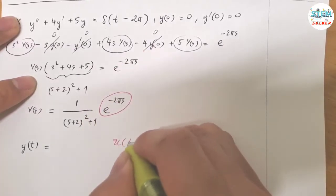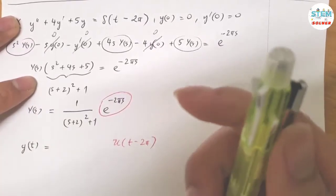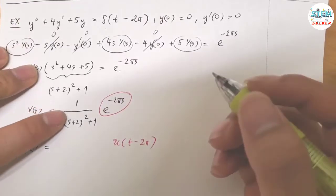Now take the L inverse of both sides. For this one, this gives me U of (t-2π). So work this out right away and you must get it right. There's no reason for you to get it wrong.